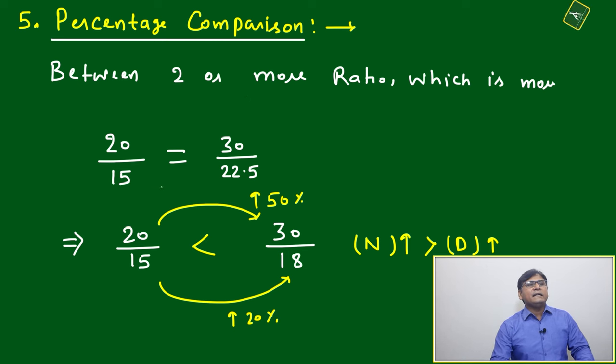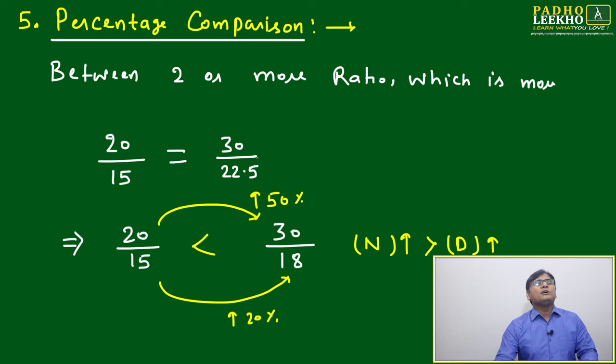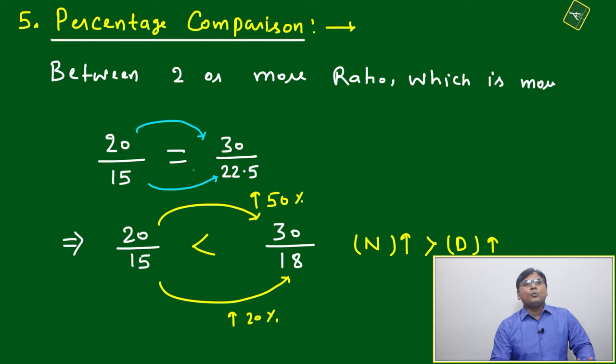Which is more? Like 20 by 15, suppose 20 by 15 is equal to 30 by 22.5. Why is it equal? Because this is also 50 percent increase, this is also 50 percent increase, so it is equal.